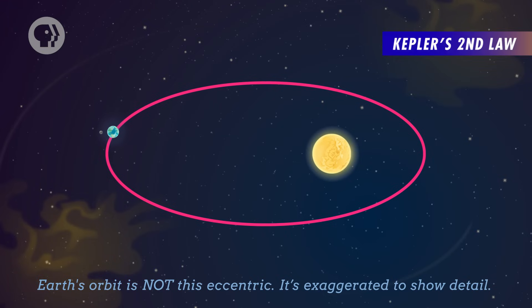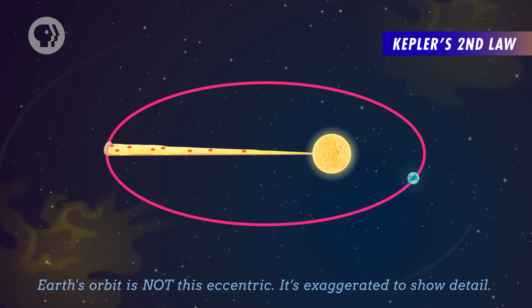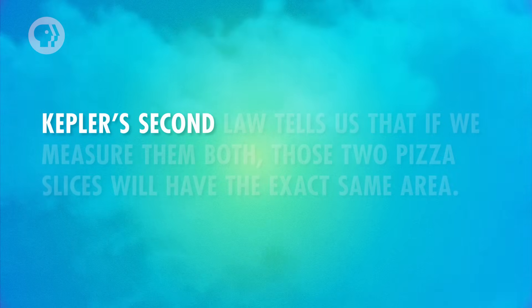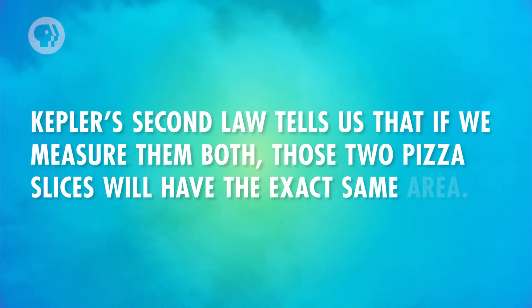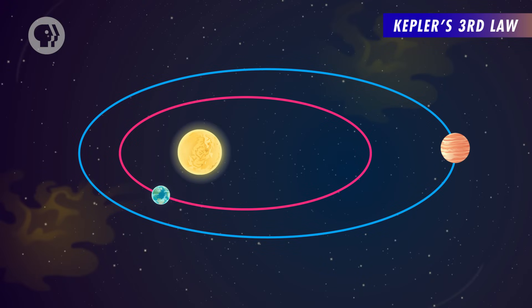Kepler's second law was that if you draw a line from a planet to the Sun, it will always sweep out the same size area within a given amount of time. When Earth is at its farthest point from the Sun, over the course of one day, we'll have covered an area that looks like a very long, very thin, kinda lopsided pizza slice. And when we're at our closest point to the Sun, one day's worth of orbit will sweep out an area that's more like a short, fat pizza slice. Kepler's second law tells us that those two pizza slices will have the exact same area.